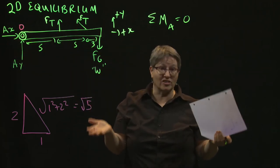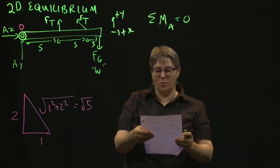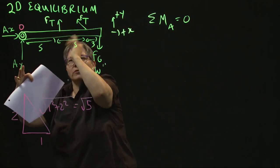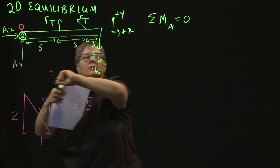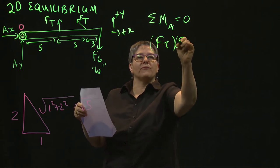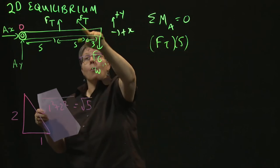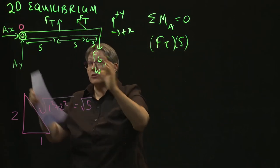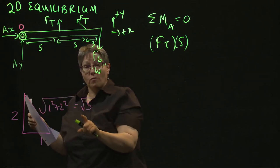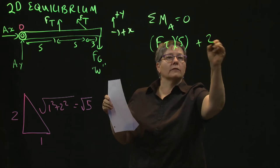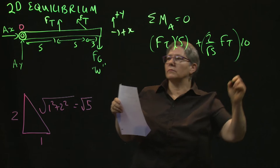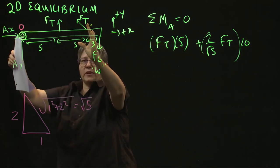The sum of the moments about A is zero. This thing is in equilibrium. It's just hanging out there. It's not moving. So that tells us this moment is positive. About that point. Right-hand rule. So we have my tension force times five feet. This moment is also positive, but it's not FT times 10. It is the two over square root of five times 10.